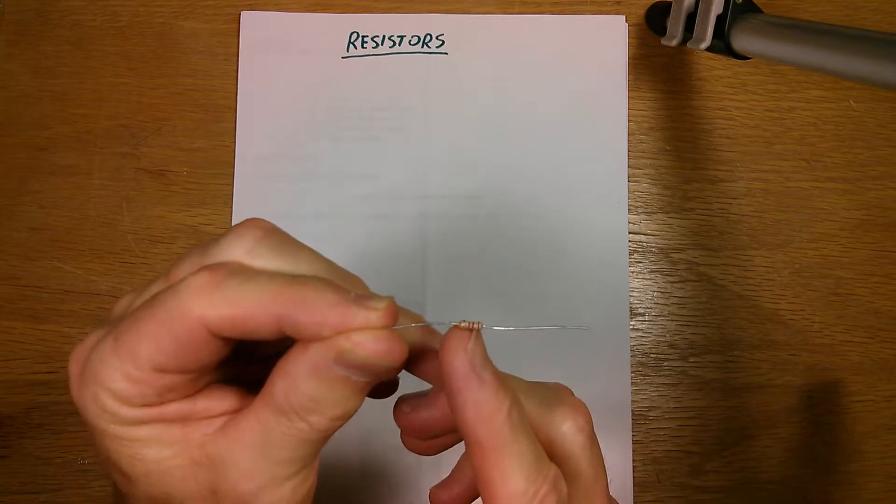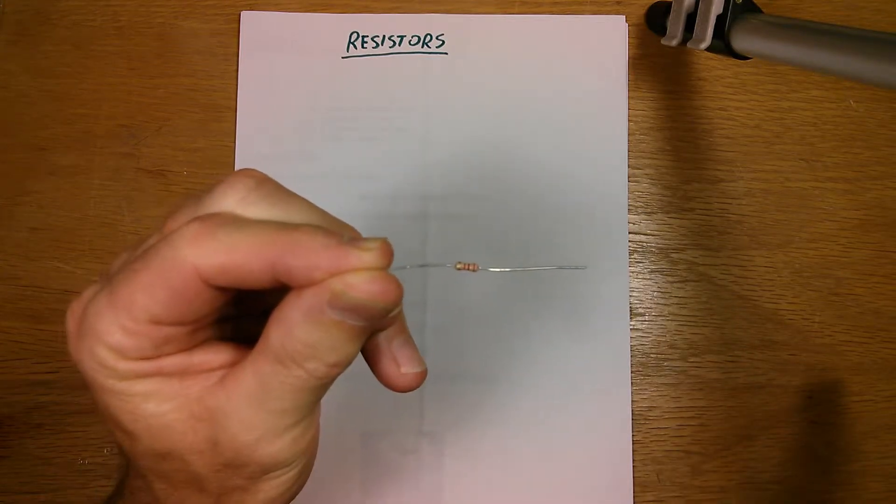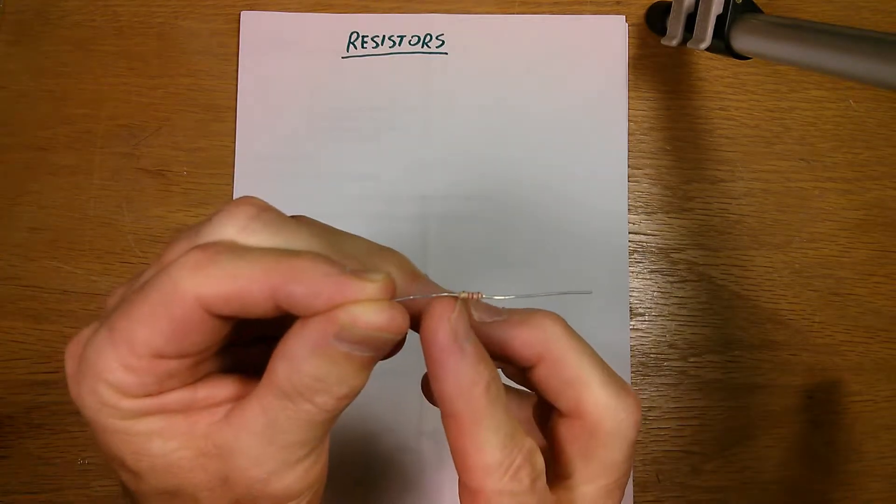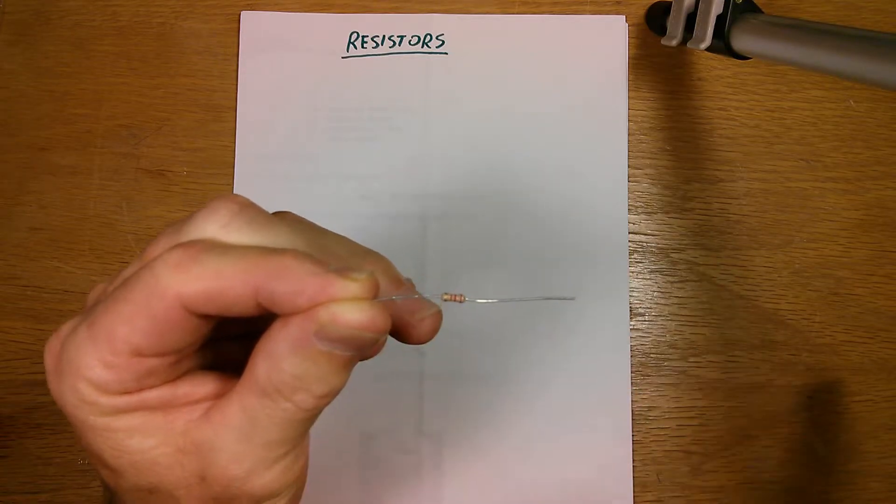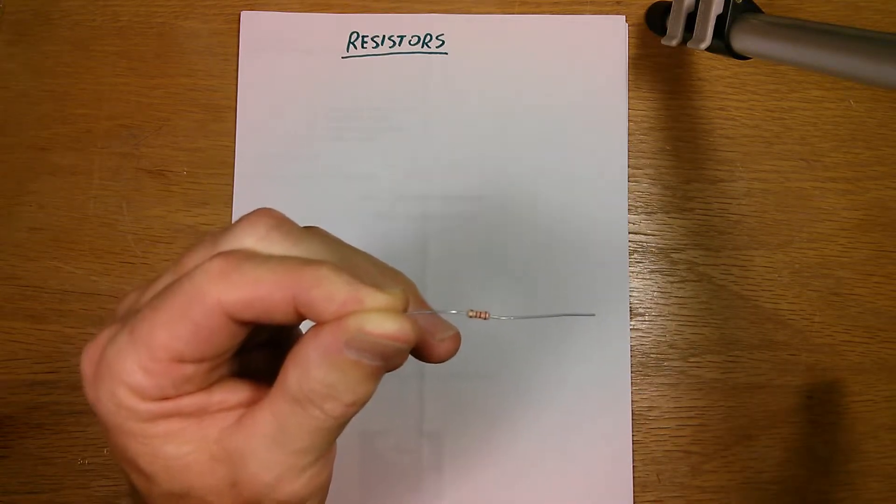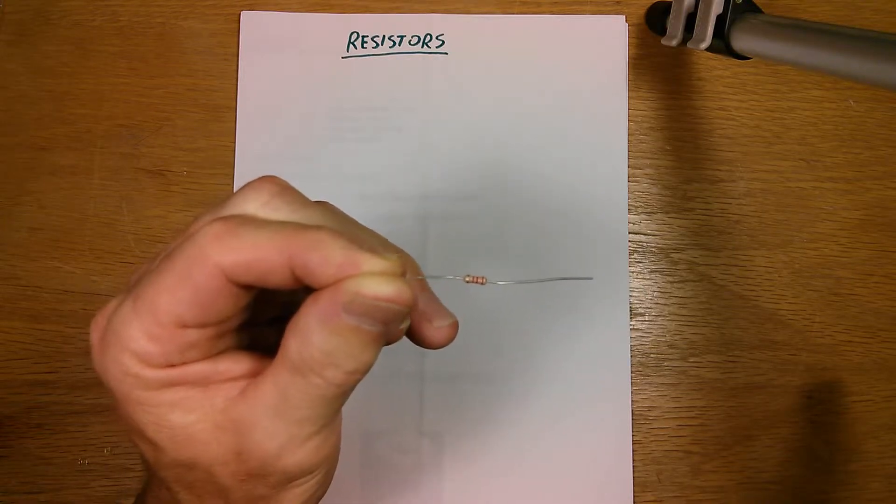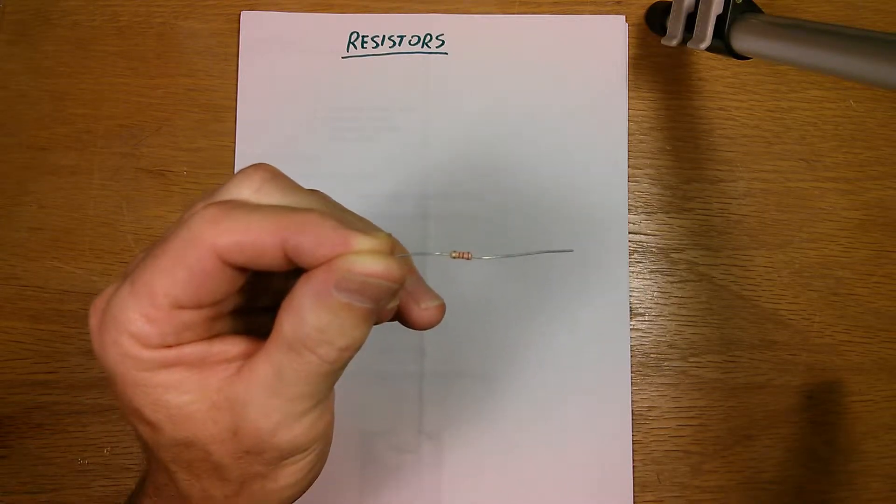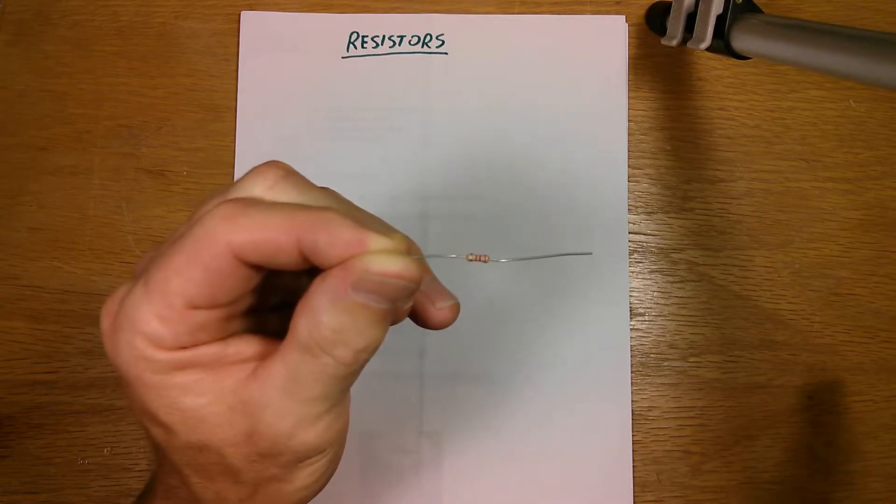You can see the color bands on them, that's how the resistance value is designated. And this far band here on the far left is what they call the tolerance. And in this case it's a 5% resistor. So what it means is that this resistor is guaranteed to be within 5% of the marked value on it.